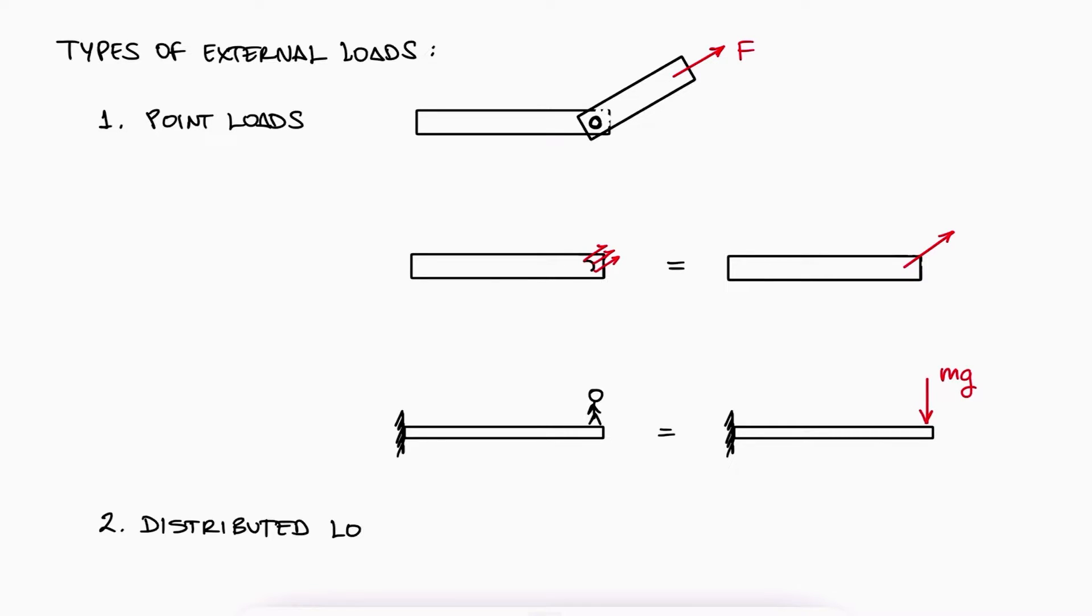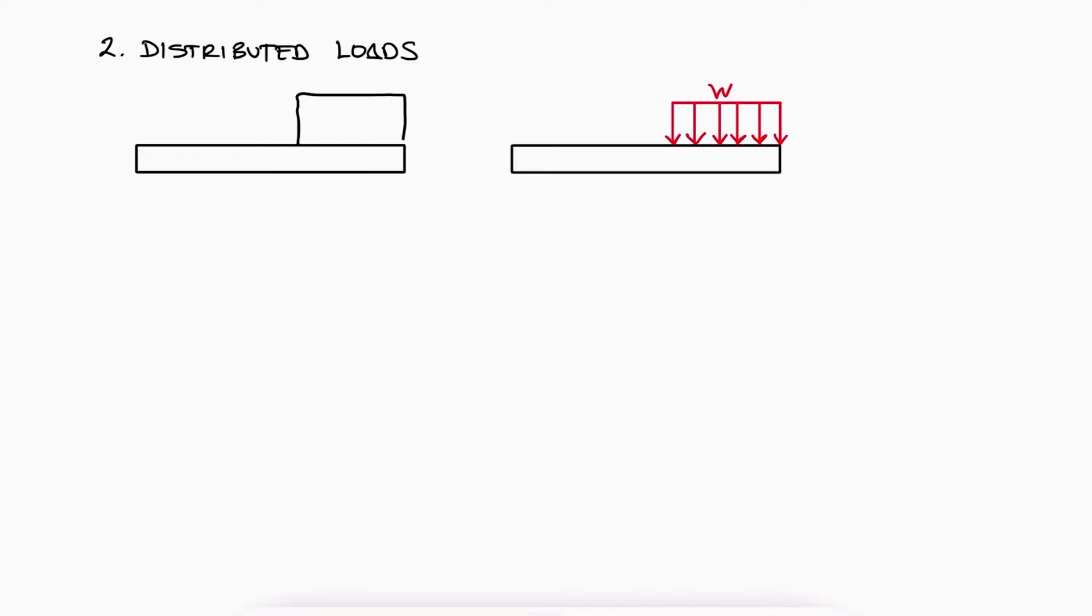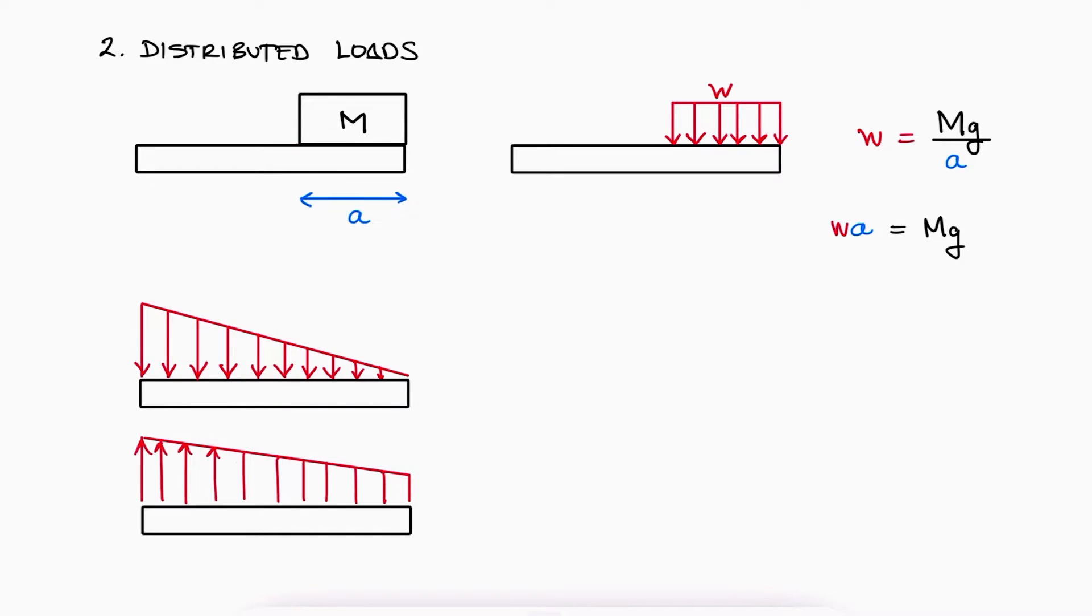Then we have distributed loads. The simplest kind would be a constant value distributed load whose location is bound by the physical interaction between bodies. A box of homogeneous density on a beam can be represented by this type of load. In 2D, the dimension on the horizontal axis would tell us where the distributed load begins and ends, and that distributed load value, W, would be equal to the weight of the box divided by the length A. The load density W times A would give us the total load.